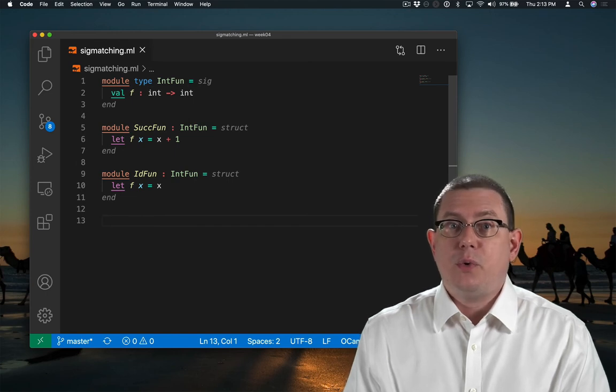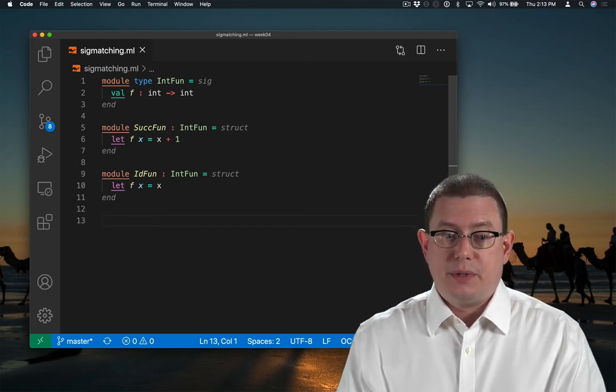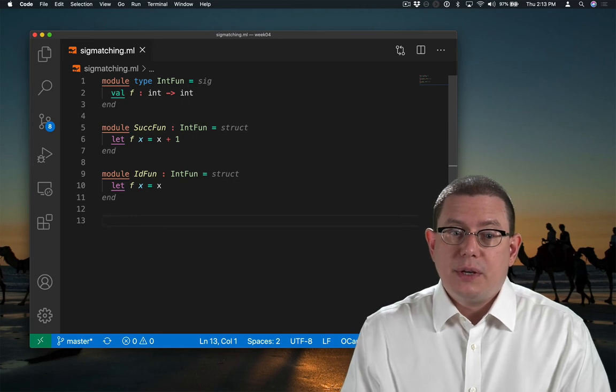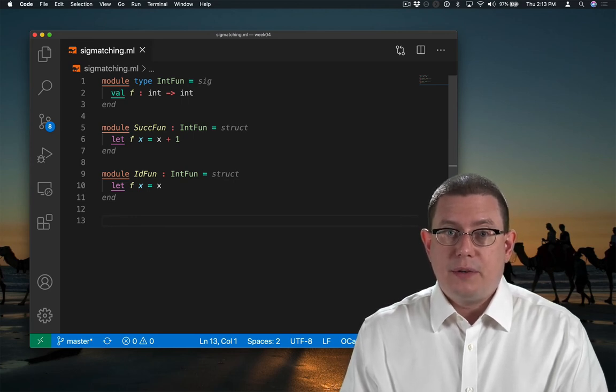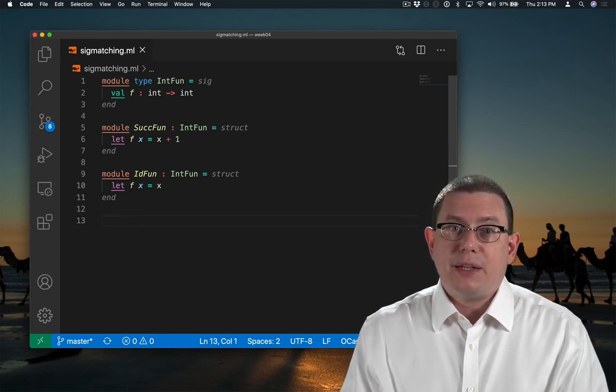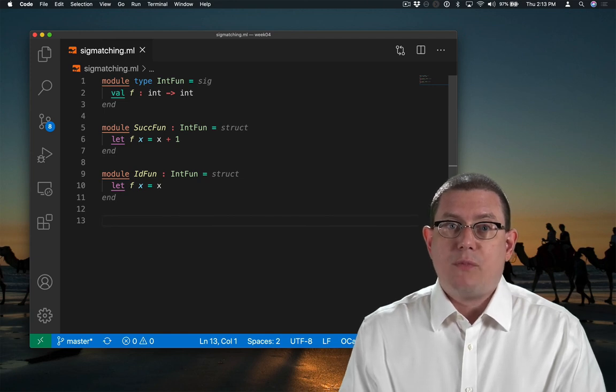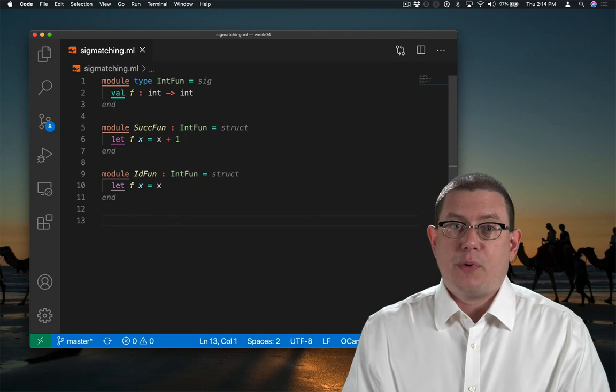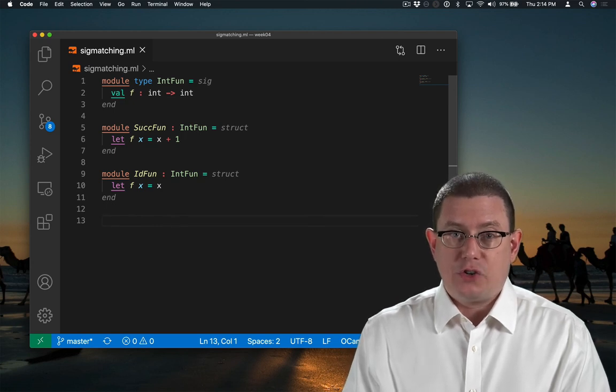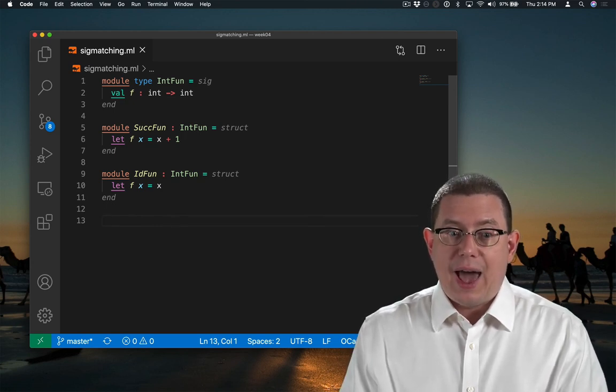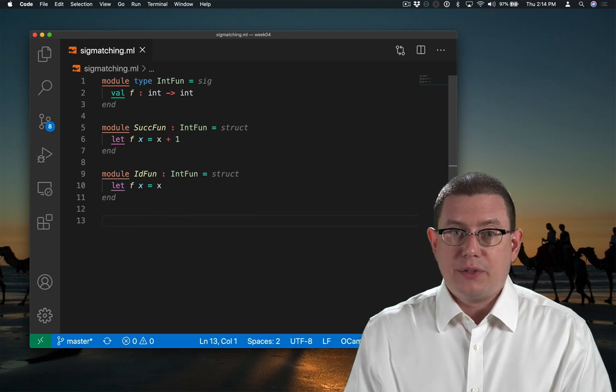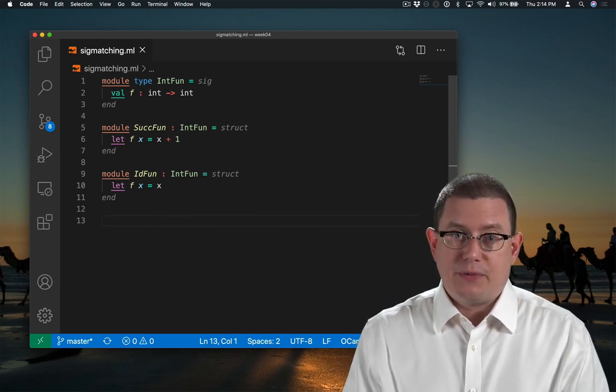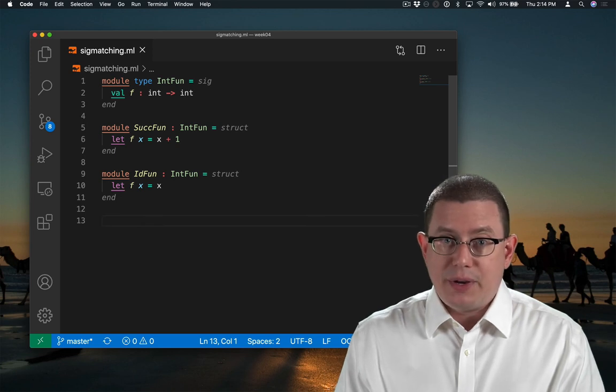Here I've implemented module IdFun with the identity function, which of course normally is happy to work on any type of value. The identity function works on bools, ints, and floats. Here I'm allowed to use it to implement IntFun because I could never get a type error by using a more general function type.